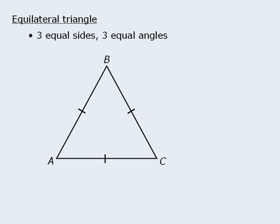Now let's examine the equilateral triangle. These are triangles with three equal sides and three equal angles. Since the three angles in any triangle always add to 180 degrees, the three angles here are all 60 degrees.